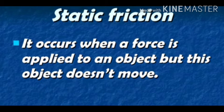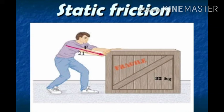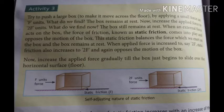As you can see in this figure, a boy is trying to push a heavy box weighing 32 kg with a force of 21 Newtons. The box does not move because the force applied by the boy is less than the frictional force acting between the ground and the box. This is an example of static friction.